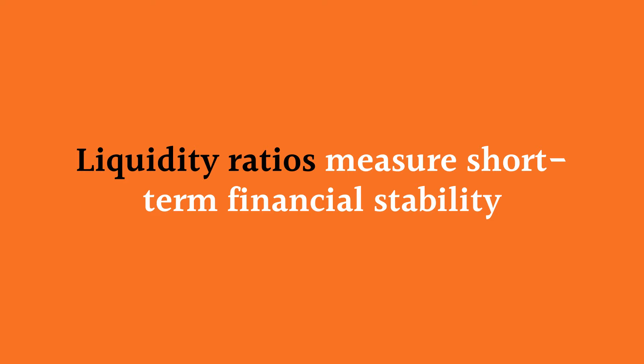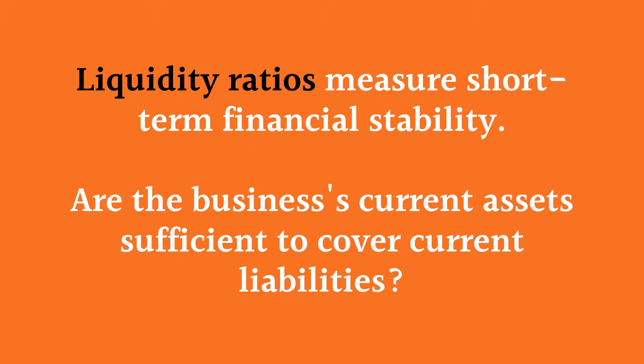If I'm thinking about the areas that we look at: we look at liquidity, we look at gearing, we look at efficiency, and we look at profitability. The liquidity ratios are looking at how well a business can meet its short-term debts — how well can a business fulfill, meet, and pay for its short-term liabilities? So what we're really thinking about is the relationship between a business's current assets, its short-term assets, and its current liabilities. If I'm thinking about the short-term financial stability of a business, I'm going to go to the liquidity ratios.